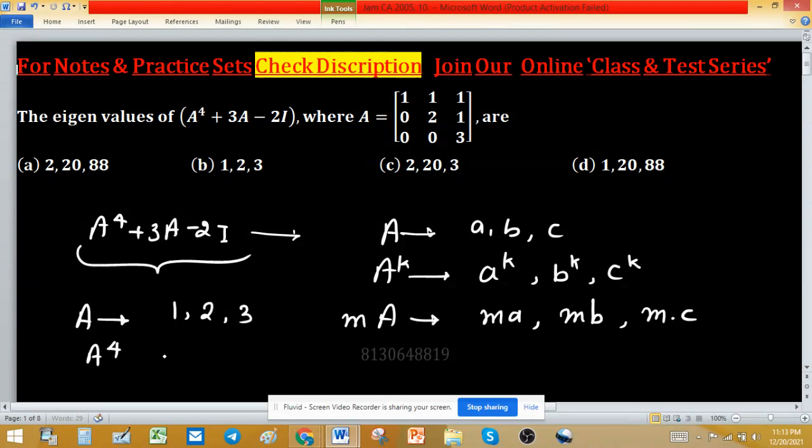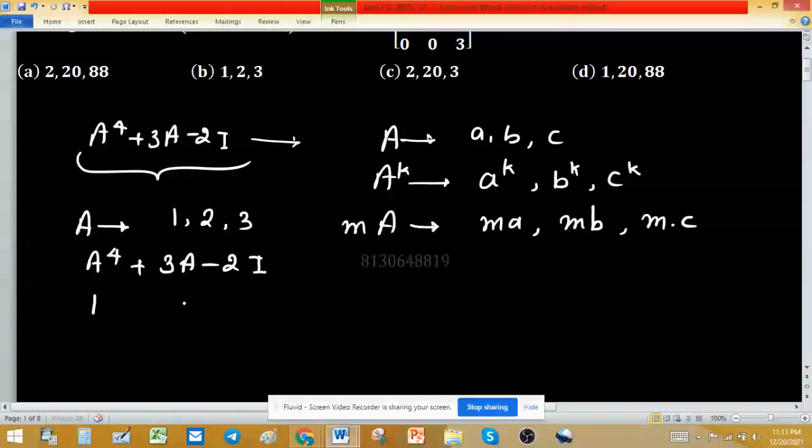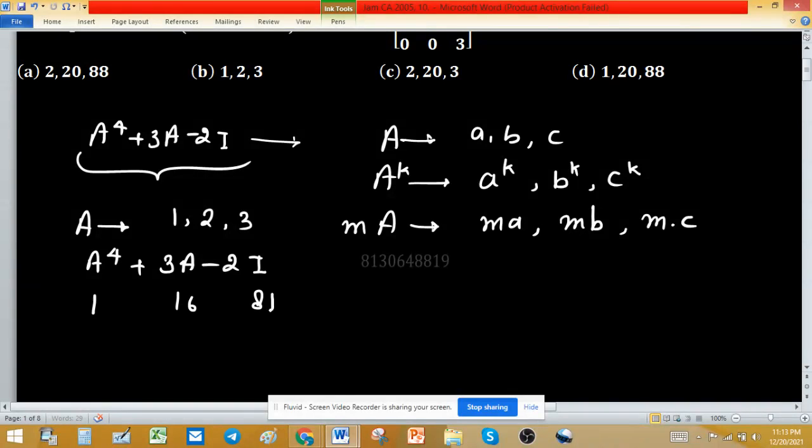So eigenvalue of A raise to the power 4 plus 3A minus 2 times identity will be first A raise to the power 4. Eigenvalue of A raise to the power 4 will be 1, 16, and 81.